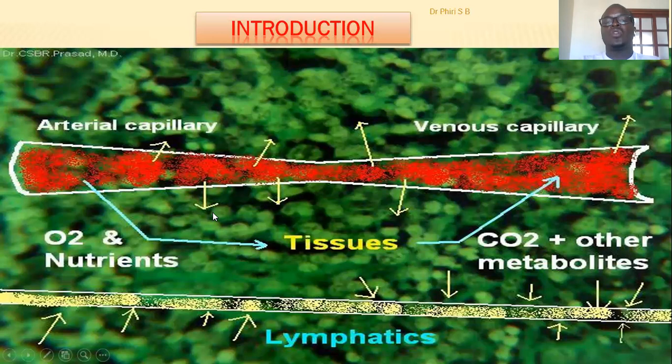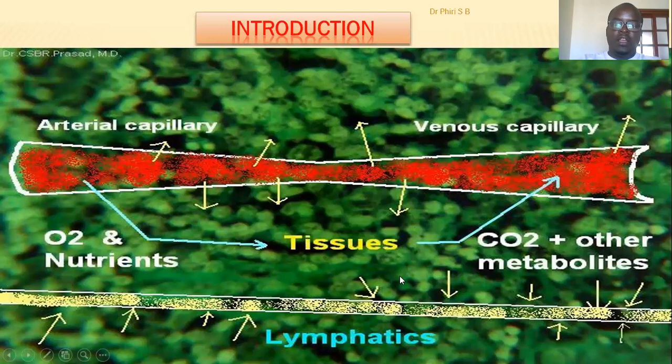Not all fluid moving from the cardiovascular system into the tissues returns to the cardiovascular system directly — there is an extra amount of fluid that remains within the tissues. That extra fluid is drained by the lymphatics. The lymphatic vessels drain the extra fluid, which is then cleaned by lymph nodes and structures like the spleen before returning to the venous circulation.